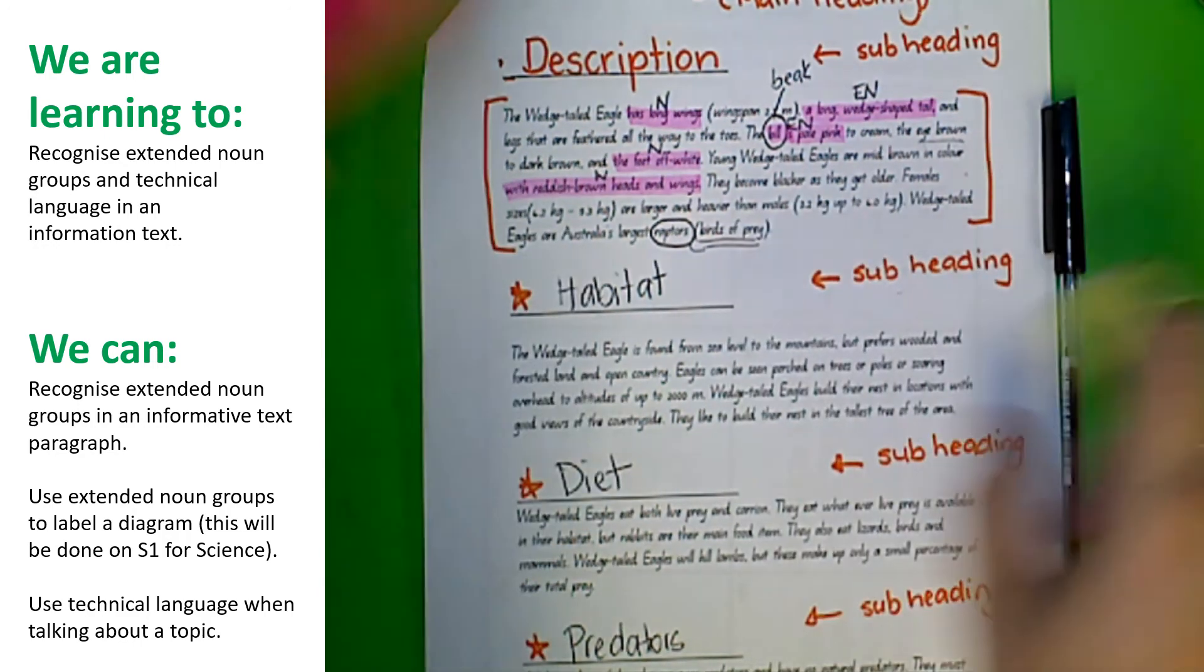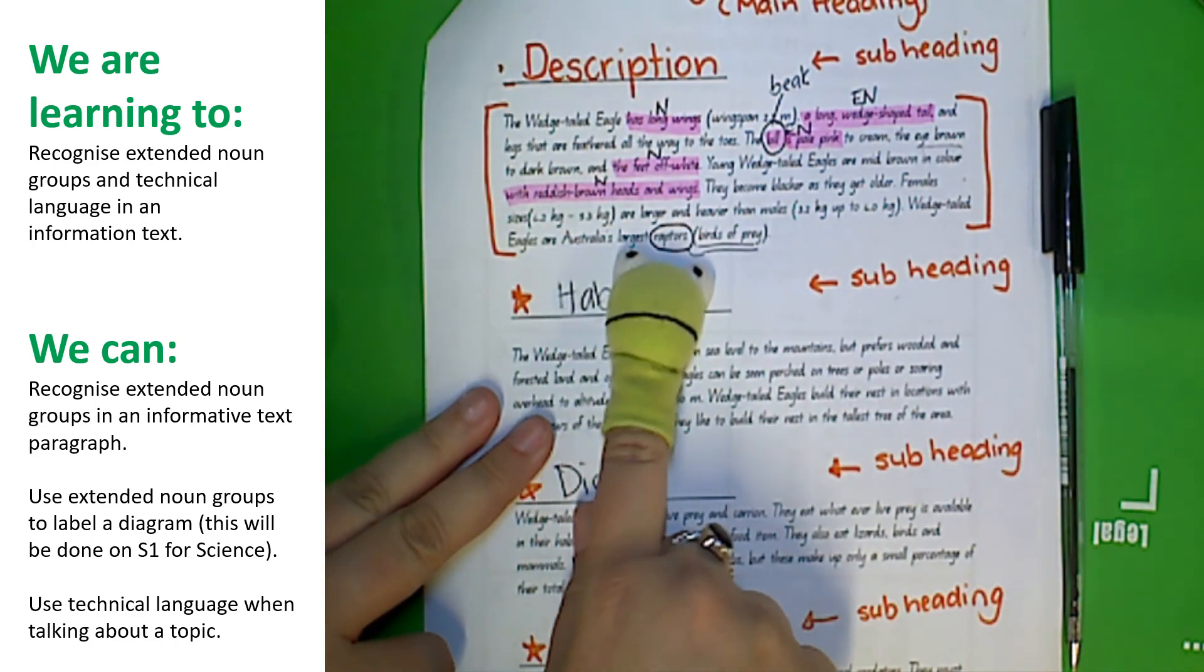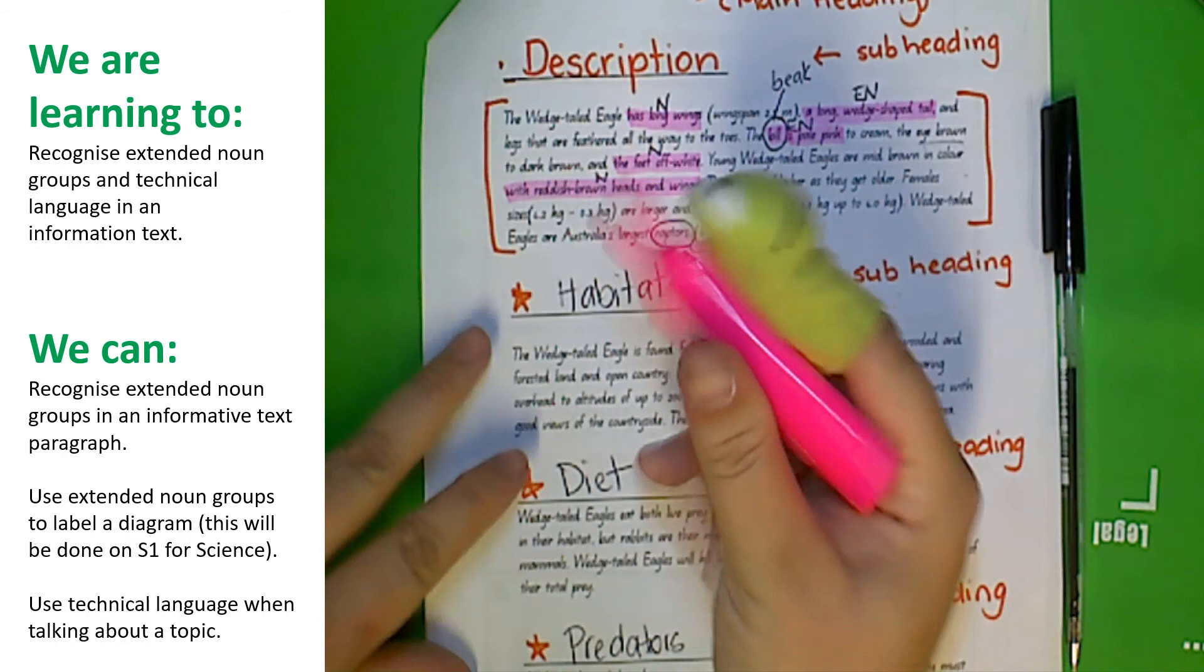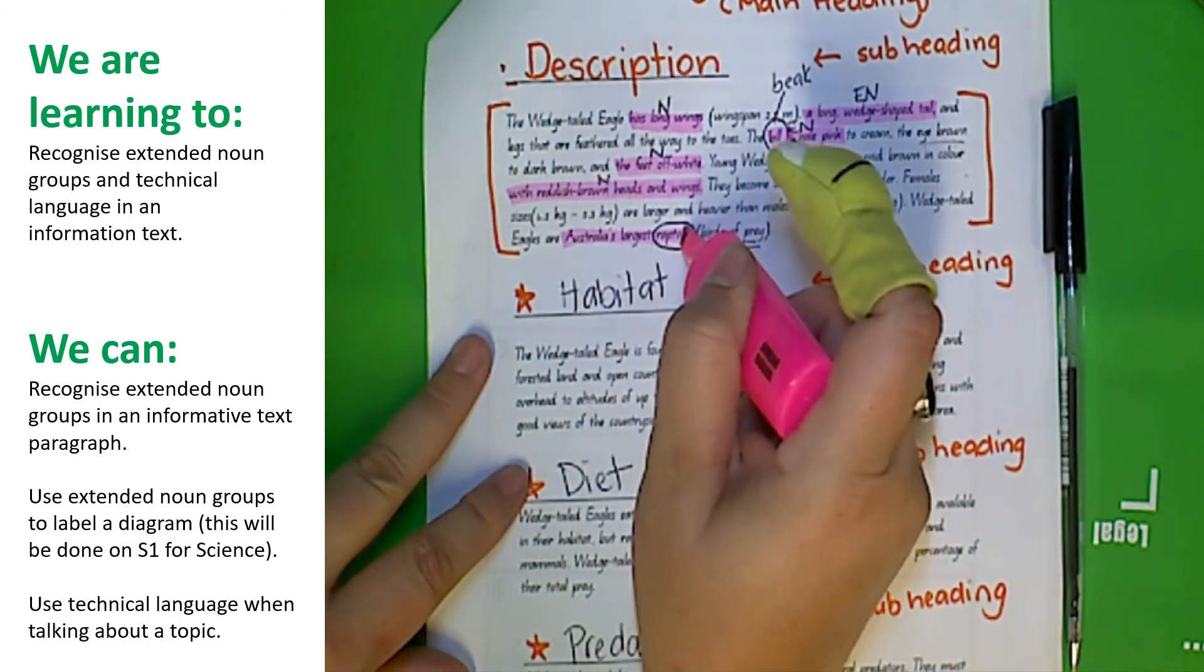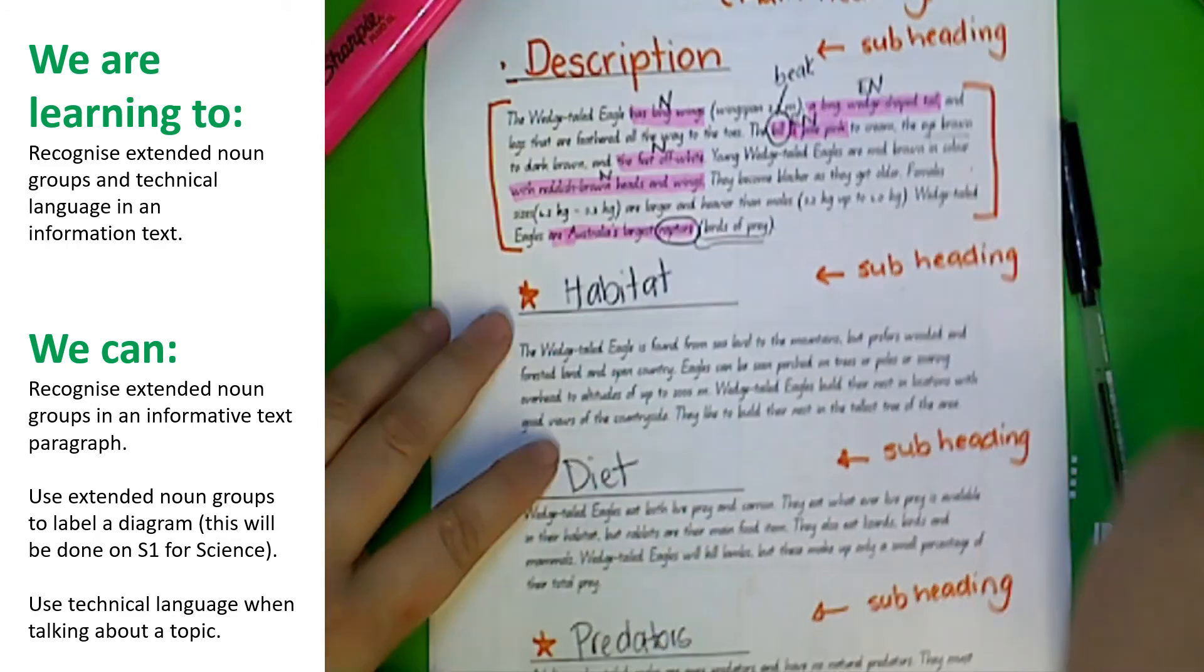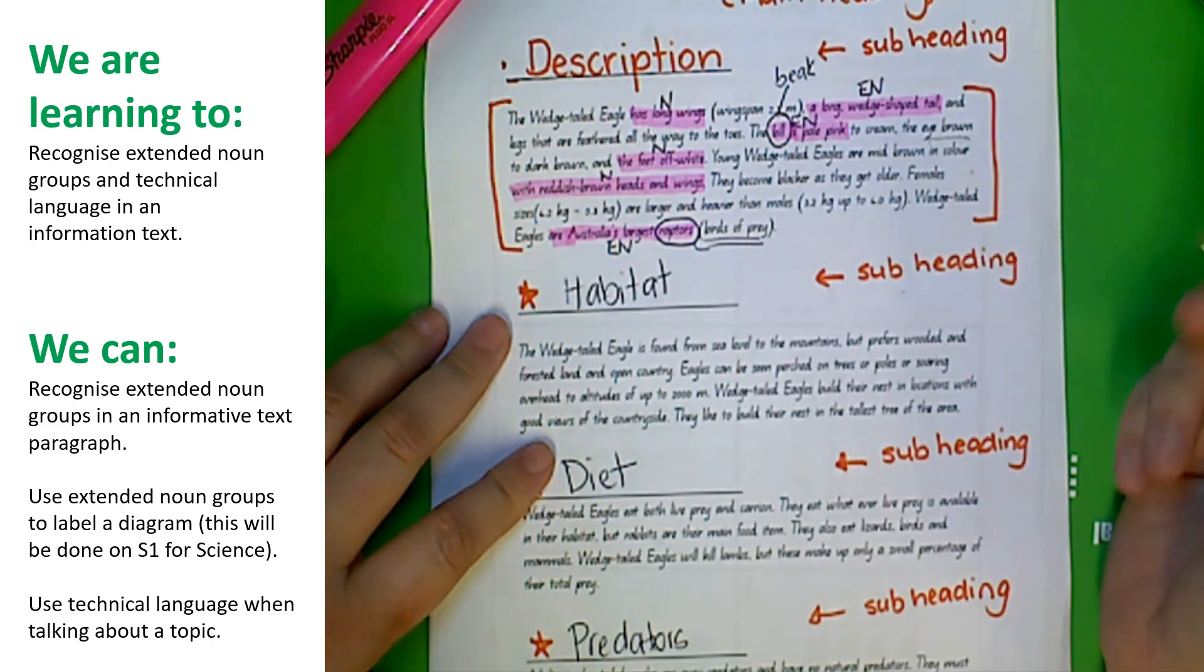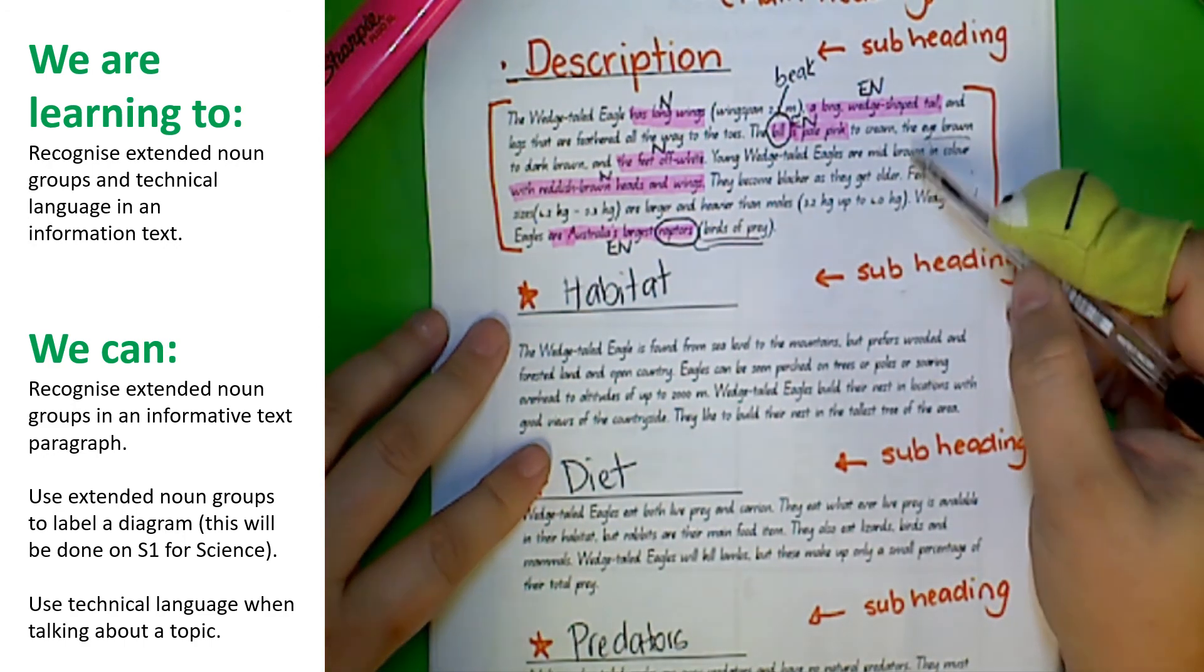I did miss an extended noun group - Australia's largest raptors. So raptors are the noun and the describing words are Australia's largest. So there is another extended noun group for that paragraph. I can recognize extended noun groups and I can recognize technical language.